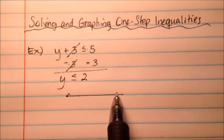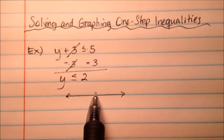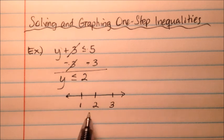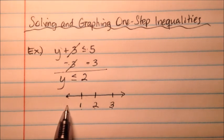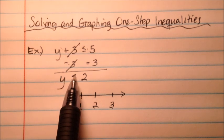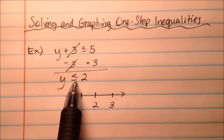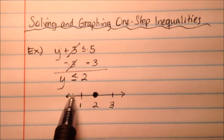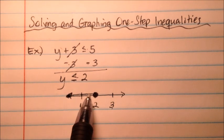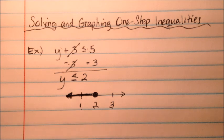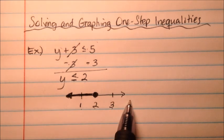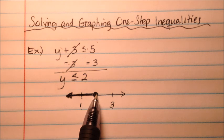So we're going to draw our number line, putting 2 right in the middle — that's our number of interest — and then one number to the right and one to the left: 1, 2, 3. Y is less than or equal to 2, so we put a closed circle at 2 because it includes the 2. Any time you have that equals sign along with the inequality, you put a closed circle. And since y is less than, we draw a line to the left. So y plus 3 ≤ 5 gives us y ≤ 2, and our graph covers 2 and everything less than that.